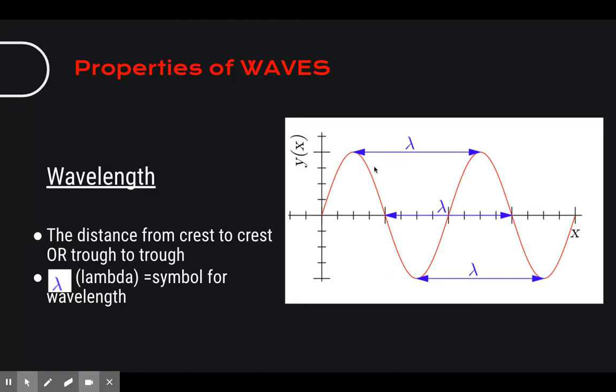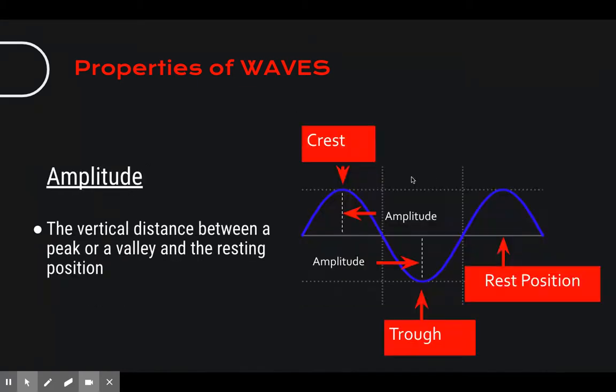Then the wavelength is from crest to crest, or trough to trough. We use the symbol lambda to mean wavelength. Amplitude is the distance from resting position to the crest, or resting position to the trough. I'm going really fast through this. You can pause the video and make sure you have all of this in your notebook.